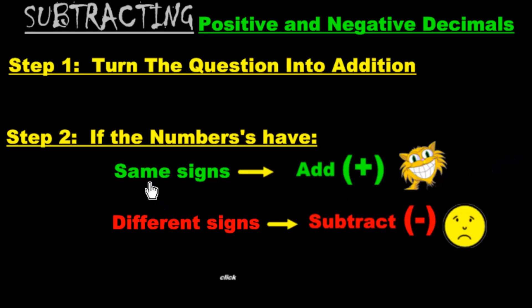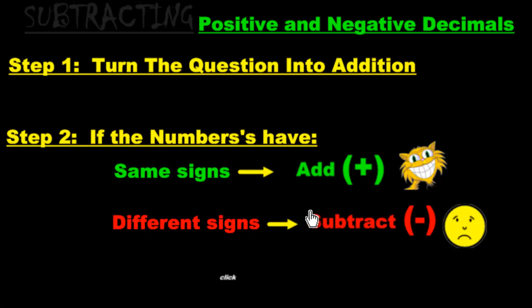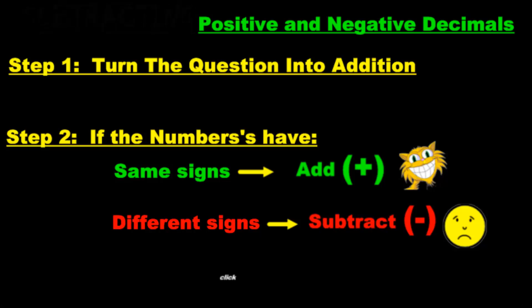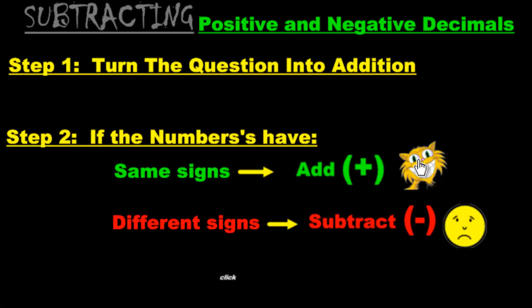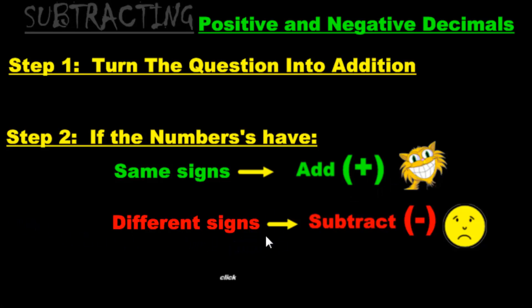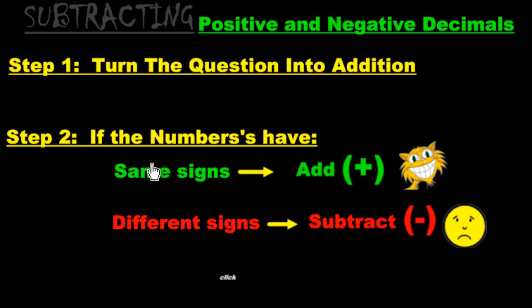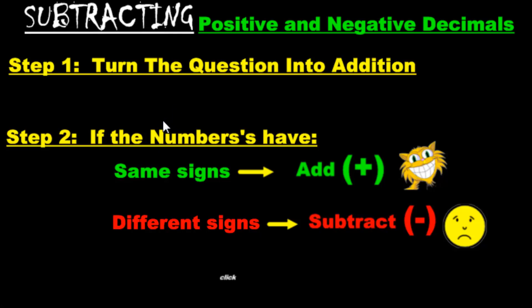If the two numbers have the same sign, you add them together. If the two numbers have different signs, you subtract them. Remember the analogy: same signs is like a bad guy added to another bad guy — they get along. But if you have a bad guy and a good guy, the signs are different and they don't get along. If you're lost, you really need to go back and watch the addition of positive and negative decimal values.